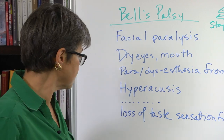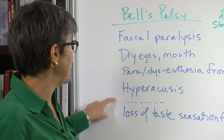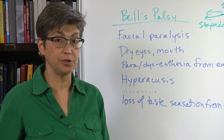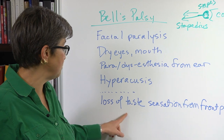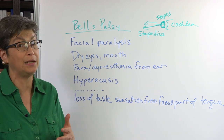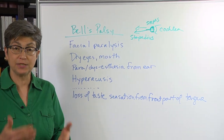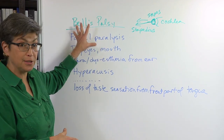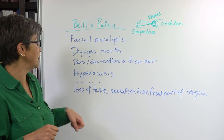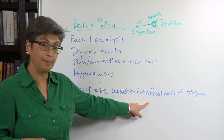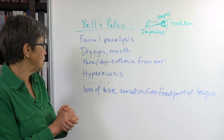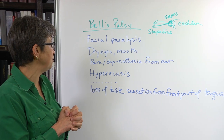People do not like hyperacusis. There's one more consequence of Bell's palsy: the person may lose taste sensation from the front part of the tongue. This is not a symptom the person is likely to complain about, but it is a testable sign. You can drop a little sugar or salt right on the front of the tongue and get nothing, then put it on the back or the other side and they get a nice taste perception. This is the full complement of Bell's palsy.